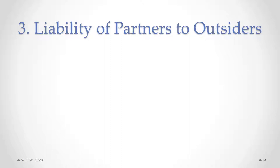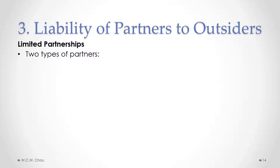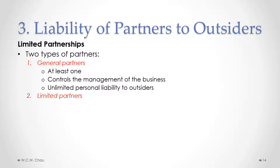The general rule of unlimited personal liability on partners is modified in the case of limited partnerships and limited liability partnerships. A limited partnership involves two types of partners: general partners and limited partners. There has to be at least one general partner. The general partner controls the management of the business and has unlimited personal liability to outsiders — so if the limited partnership is sued, the partnership assets and all personal assets of the general partner can be used to satisfy that debt.